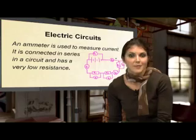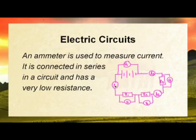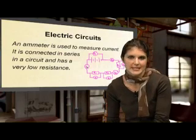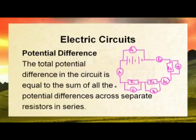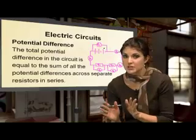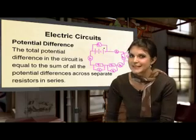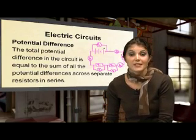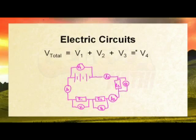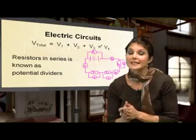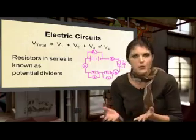Current gets measured by our ammeters — the circles with the capital letter A — and ammeters have a very low resistance so they do not use up any of the energy of the charges. Now for potential difference: it's going to be the sum of each one of the potential differences across the resistors. We have a total potential difference across the battery, assuming no internal resistance. We'll be discussing internal resistance in our next lesson. So V1 plus V2 plus V3 gives us back our total voltmeter reading. Our resistors when connected in series are known as potential dividers because they split the potential difference up.